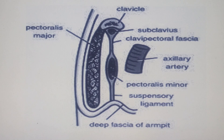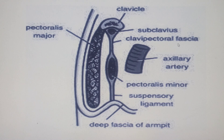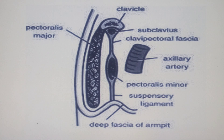Part of this clavipectoral fascia inferiorly is what we call the suspensory ligament of the axilla. The deep fascia of the armpit is attached to this suspensory ligament, which is an inferior extension of the clavipectoral fascia. When this ligament is pulled, the floor of the axilla takes on a dome shape — which is why when you look at your own axilla, it has that dome-shaped appearance.